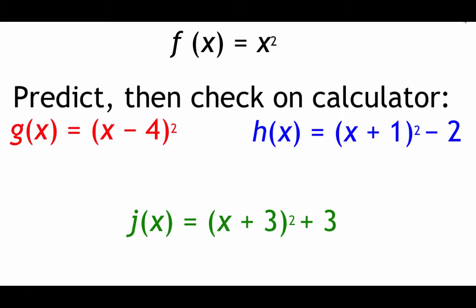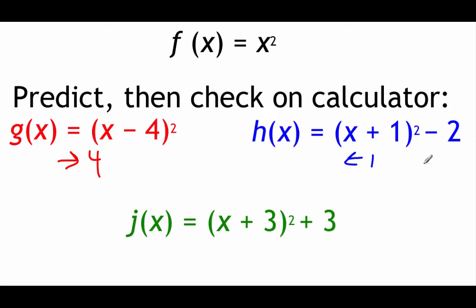Here's what I want you to do with this example. We've got f of x equal to x squared. Take a guess as to what's going to happen with each function, then graph them on your calculator to check. Pause the video and try it. For g of x, subtraction inside the parentheses means a right shift four spaces since it's minus 4. For h of x, plus 1 inside the parentheses means left 1, and minus 2 outside means down 2. For the last one, plus 3 inside means left 3, and plus 3 on the end means up 3.